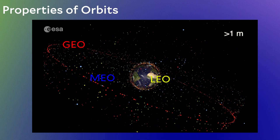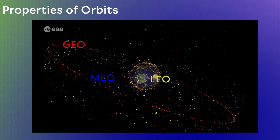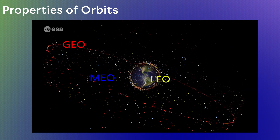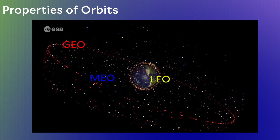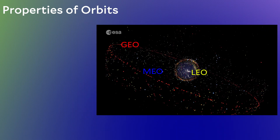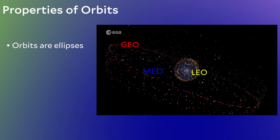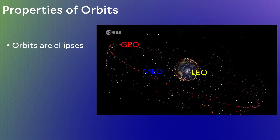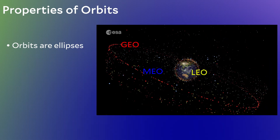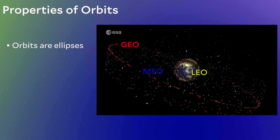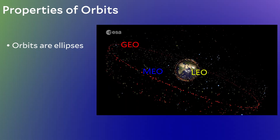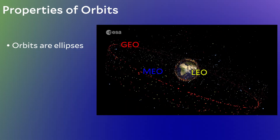Taking a look at the animation from last segment, the first thing you might notice is that objects are moving in roughly circles — and maybe they aren't perfect circles but slightly squashed. A squashed circle is called an ellipse. So if we state that all orbits are ellipses, we include circles as part of this. Orbiting satellites don't trace out squares or triangles or zigzag all over the place. An important property of an orbit is that it traces out an ellipse in space.